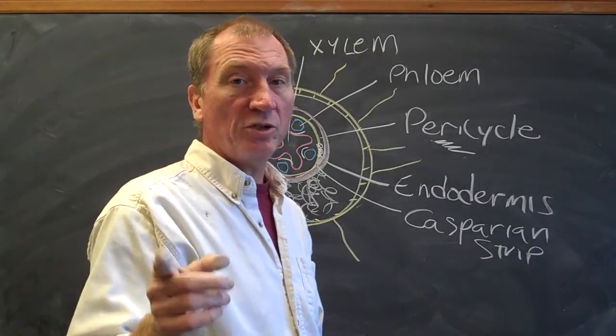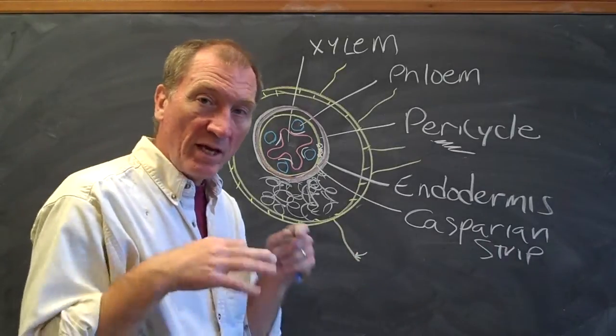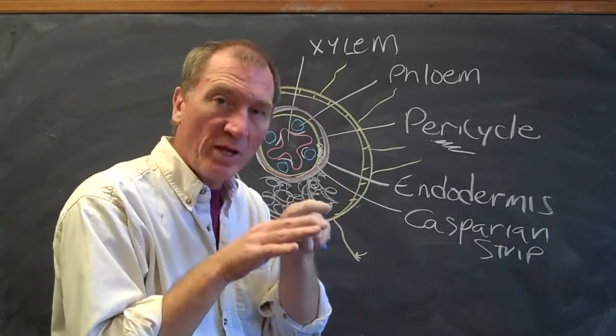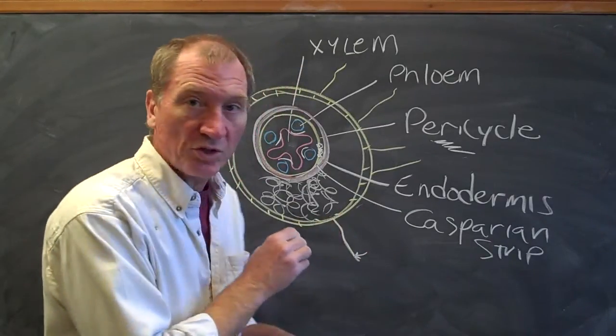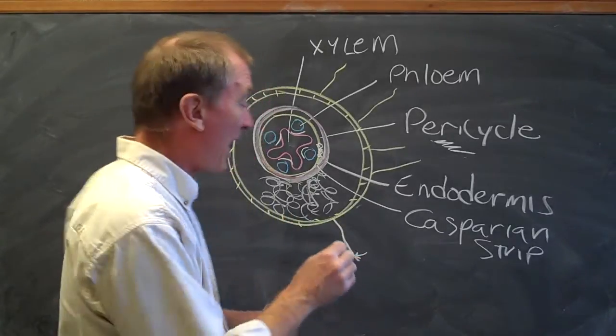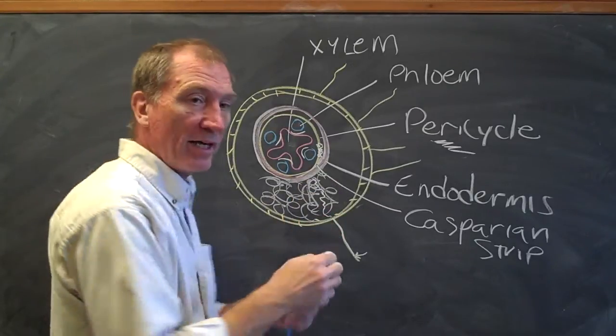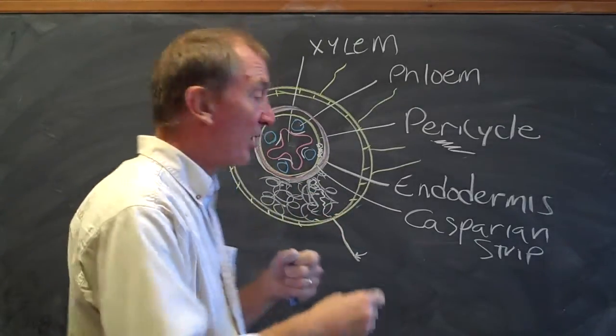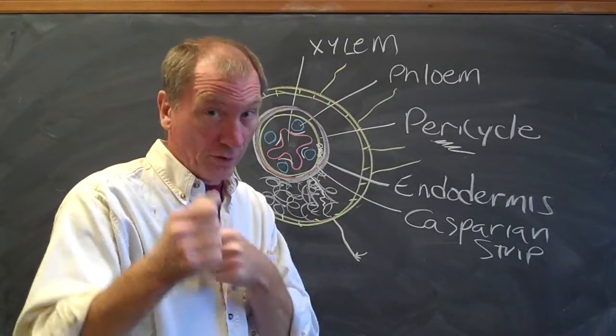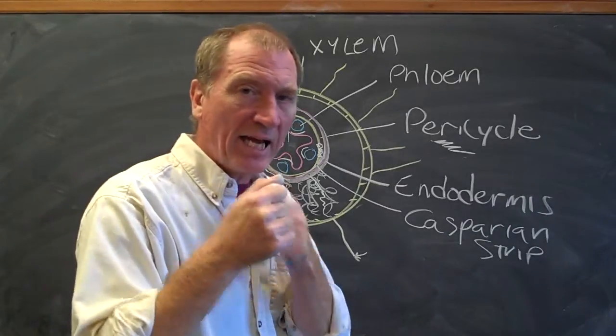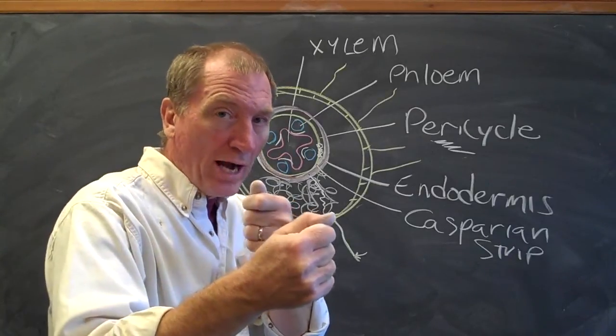So when water moves into a root, the water molecules move into the protuberances of the epidermis, the root hairs, move into the epidermal cells. And then water can take two paths. It can either move between the parenchyma cells, or it can go cell to cell within the parenchyma until it reaches the endodermis. And there it encounters, if it's trying to move between the cells, it encounters the Casparian strip, which doesn't let it go any further between cells.